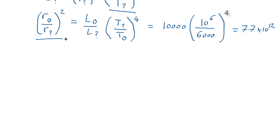So we've got a square here, so let's take the square root of both sides of the equation. We therefore find that R Sun over R mystery object is equal to the square root of this, which comes out as 2.8 by 10 to the 6.